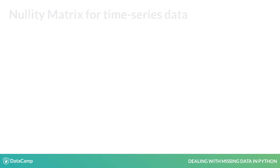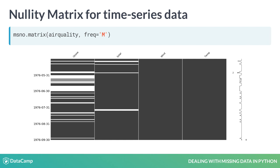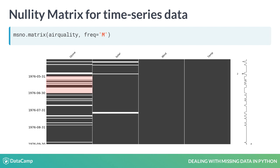Since this is a time series dataset, we can set the frequency to 'M' (month) to obtain a nullity matrix ranging over time. This way, we can clearly observe during which season there is a higher amount of missingness. From this plot, we can observe that there are higher amounts of missing values in the month of June.